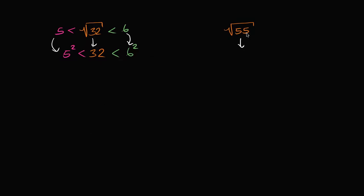So if we square the square root of 55, we're just going to get to 55. We're just going to get 55. We say, well, okay, 55 is between which two perfect squares?